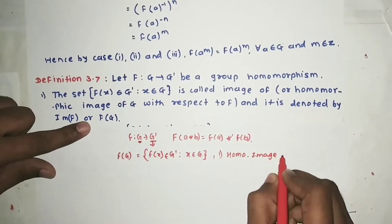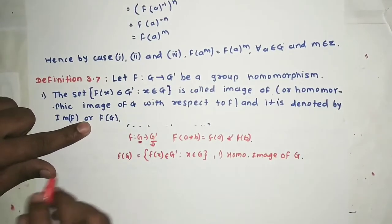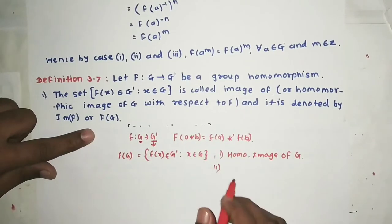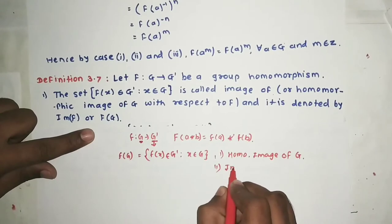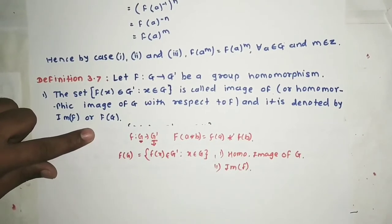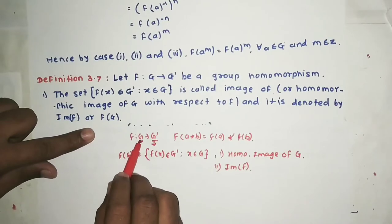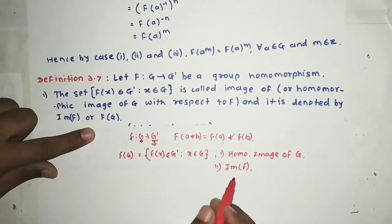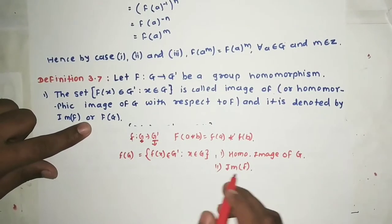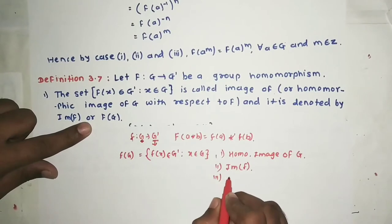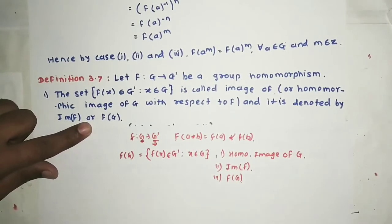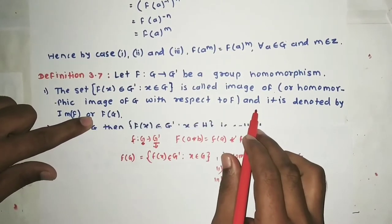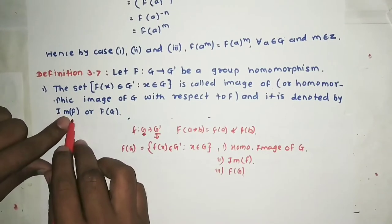The homomorphic image of G is also called the image of f. It is denoted as image of F, or f(G).